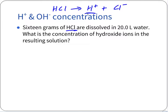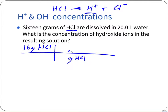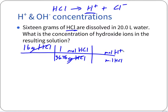To convert, we start with 16 grams of HCl and convert to moles. Chlorine is 35.45 and hydrogen is 1.01, giving a molar mass of 36.46 grams per mole of HCl. That cancels the grams of HCl. Using the 1-to-1 mole ratio of HCl to H⁺, we get 16 divided by 36.46, which comes out to about 0.438837 moles of H⁺.